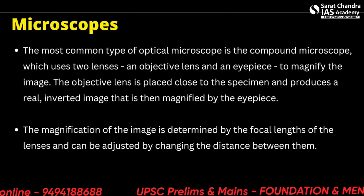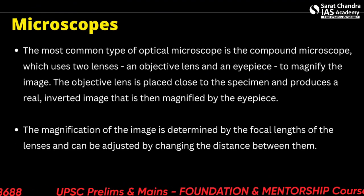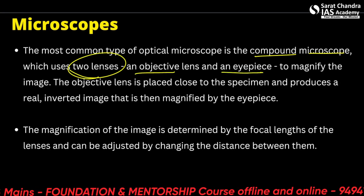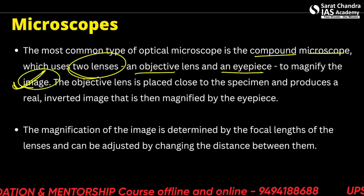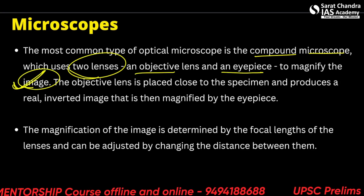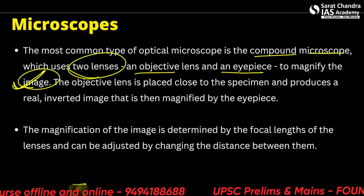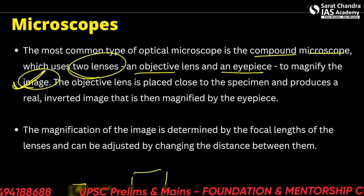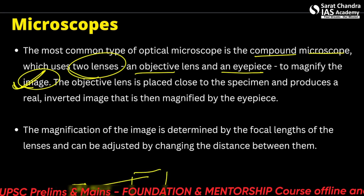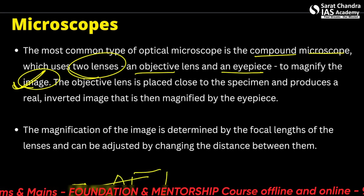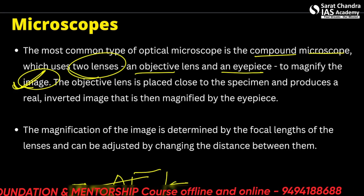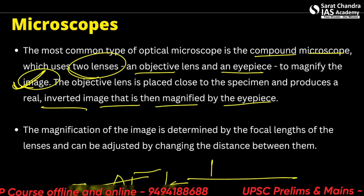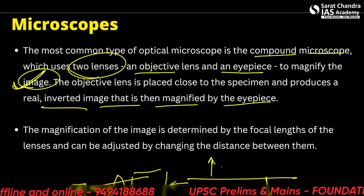Now let's talk about microscopes. The most common type of optical microscope is the compound microscope, which uses two lenses — an objective lens and an eyepiece — to magnify the image. An image is first formed through the objective lens, appearing inverted and real, and then this inverted image is magnified further by the eyepiece, so the eye sees it larger than the actual object.